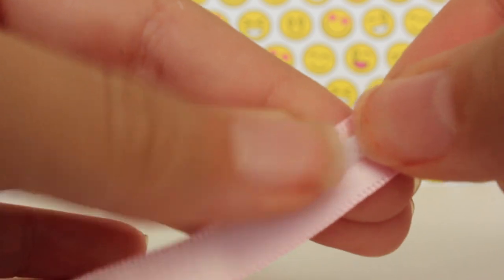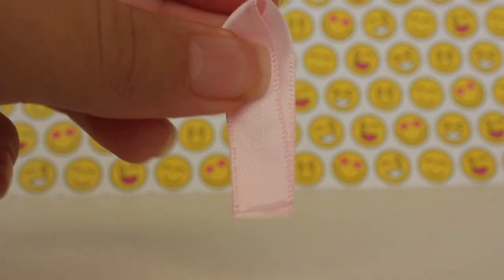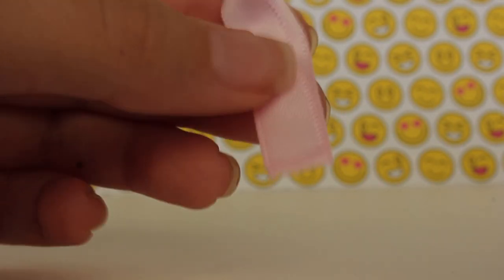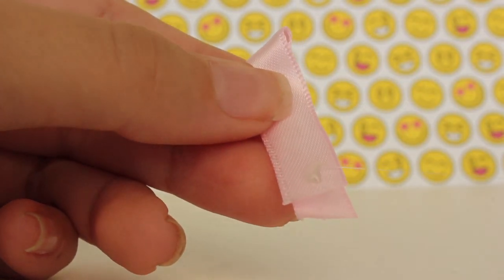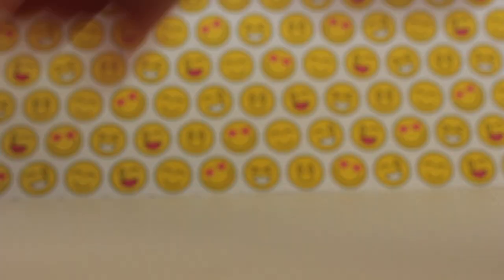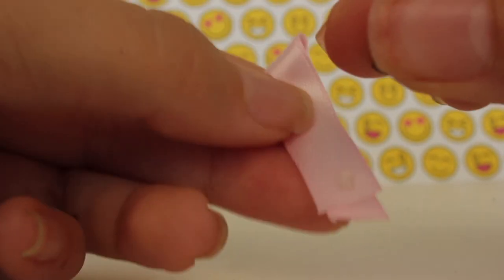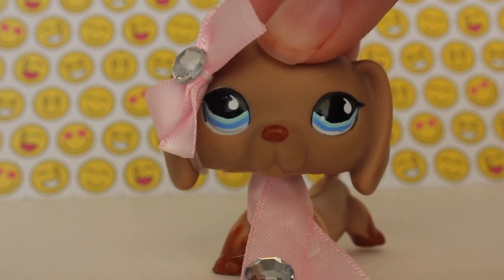Now to spice up the scarf I'm going to put a little rhinestone, so I'm just going to add a little bit of hot glue right here and then I'm going to get a rhinestone that I have on the side here and just glue it on. And voila, your scarf is ready!